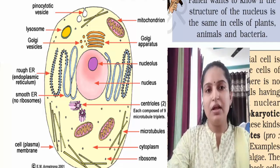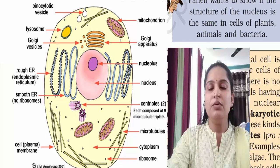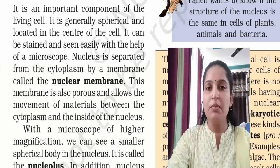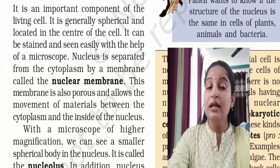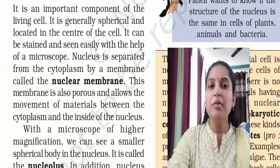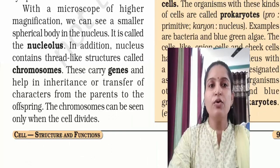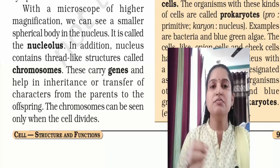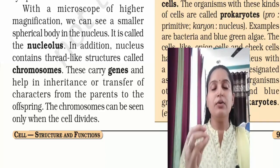The nuclear membrane is also a semi-permeable membrane — it allows some components to enter and some to exit, while blocking others. With a microscope of higher magnification, we can see a smaller spherical body inside the nucleus. It is called the nucleolus.